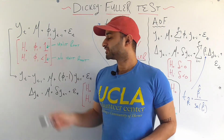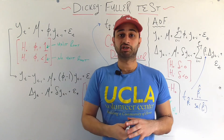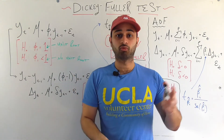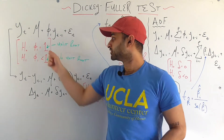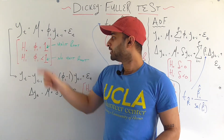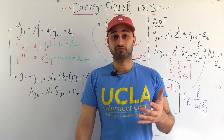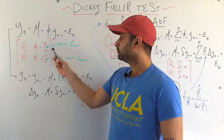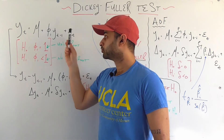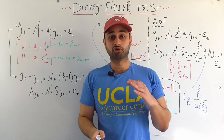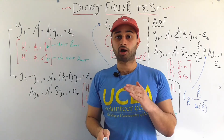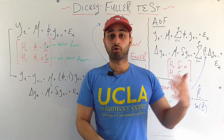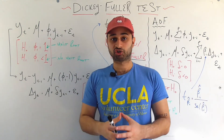The null hypothesis H0 for the Dickey-Fuller test is that phi_1, the coefficient in front of the lagged time series, is equal to 1. If you've watched my unit roots video, you know that this would mean the time series has a unit root. And that means the time series is not stationary — if phi_1 is 1 or greater, the time series is not stationary.